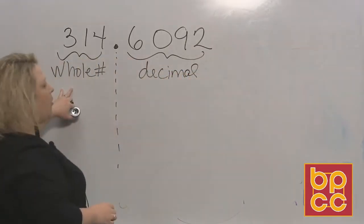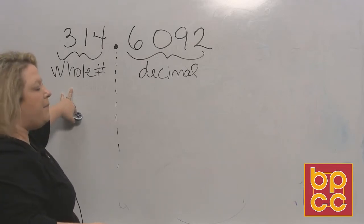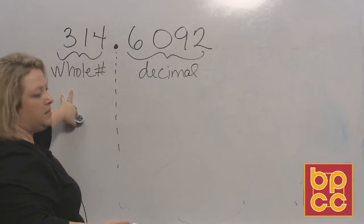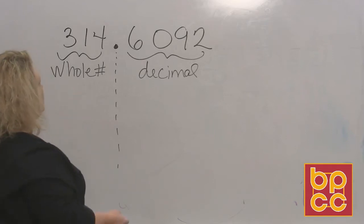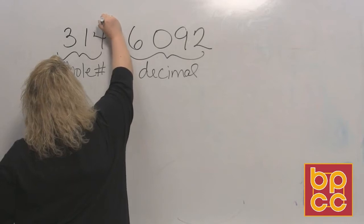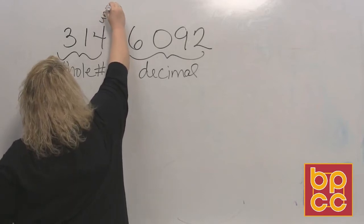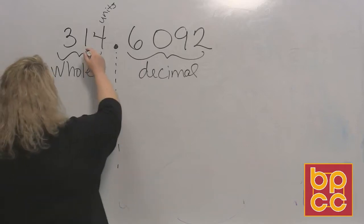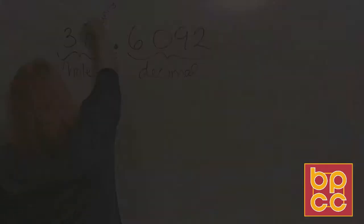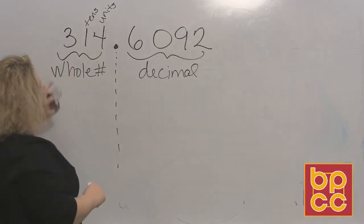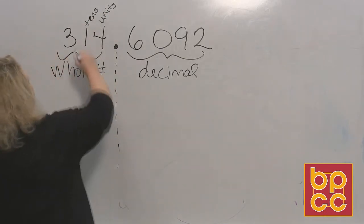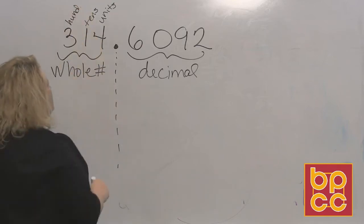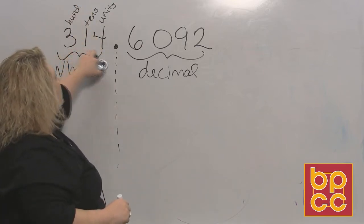The whole number part — everything is like you have that much in whole dollars. Three hundred fourteen, for instance, would be three hundred fourteen dollars because the four is in the units or ones place, the one is in the tens place, and the three is in the hundreds place. So that says three hundred fourteen.